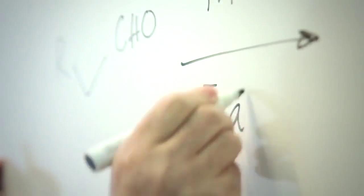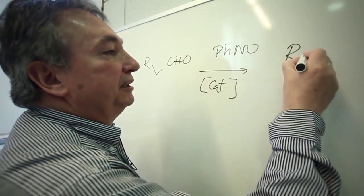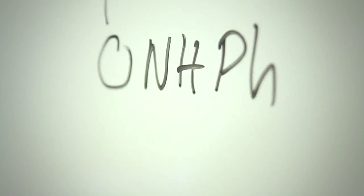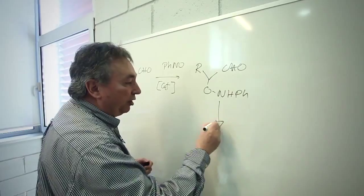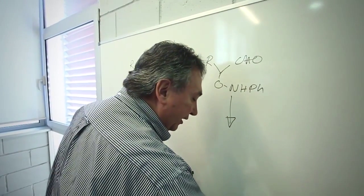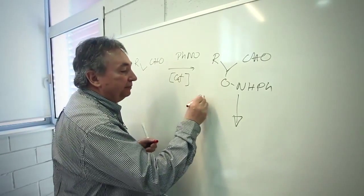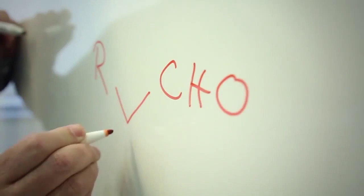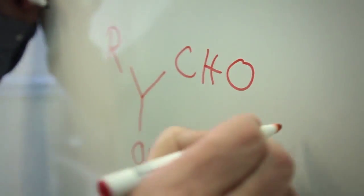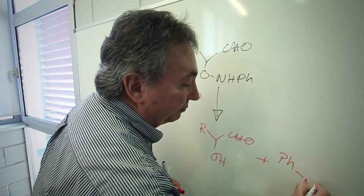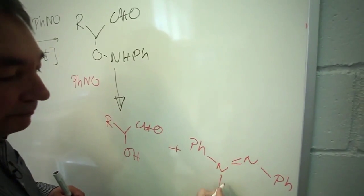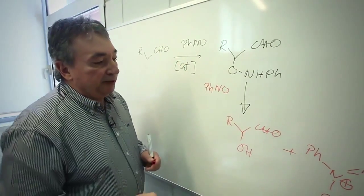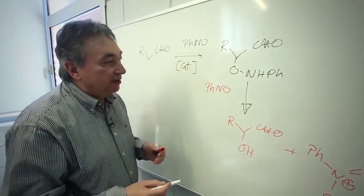You have a certain catalyst and this promotes the initial process. But this is complicated by the fact that a secondary reaction, which is non-catalytic, uses another molecule of nitrosobenzene, which reacts with the primary product. This leads to the alpha-hydroxyaldehyde plus a byproduct, which is azoxybenzene.